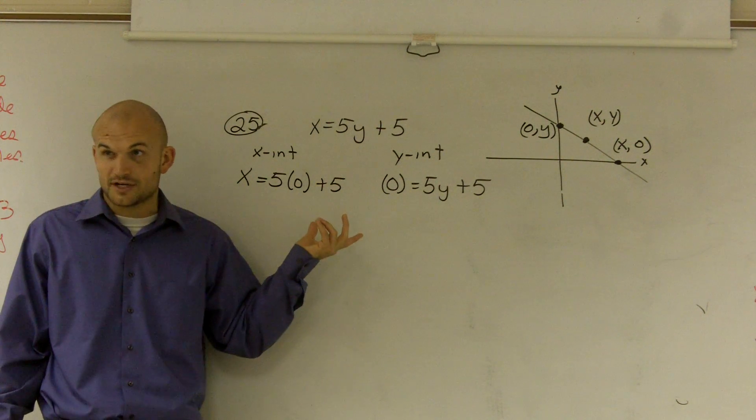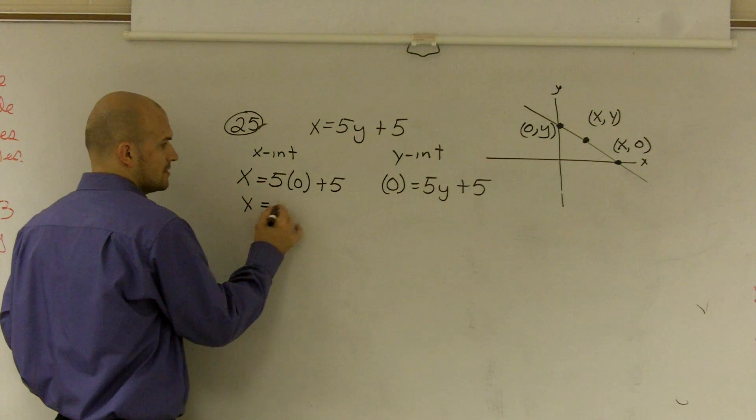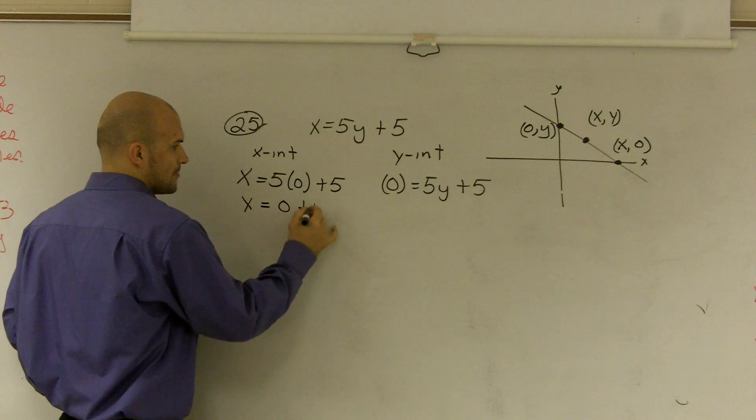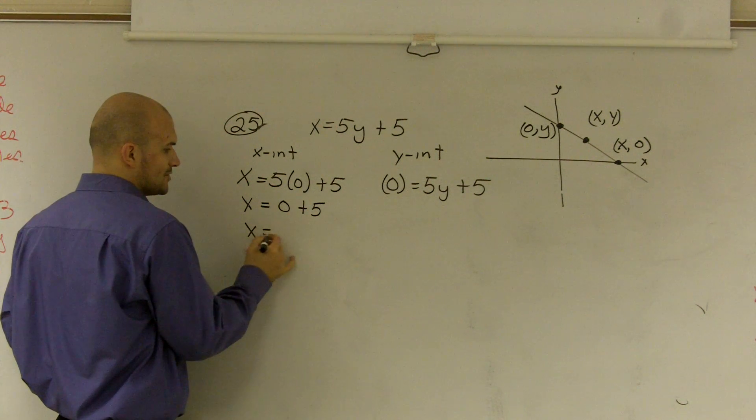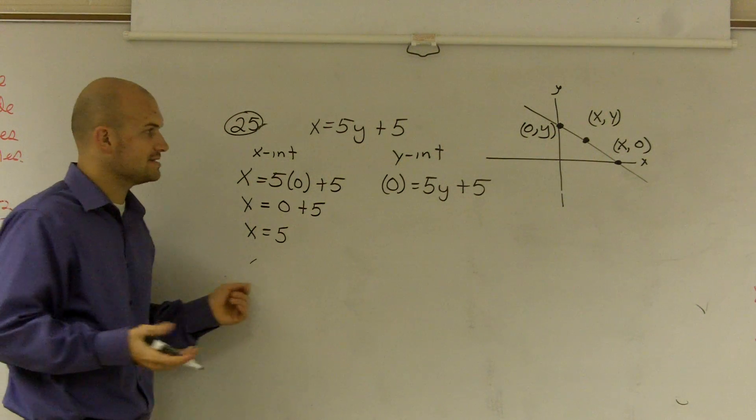This is beginning of the year, solving for variables. So now, five times zero is zero plus five. X equals five. Done. That was very easy.